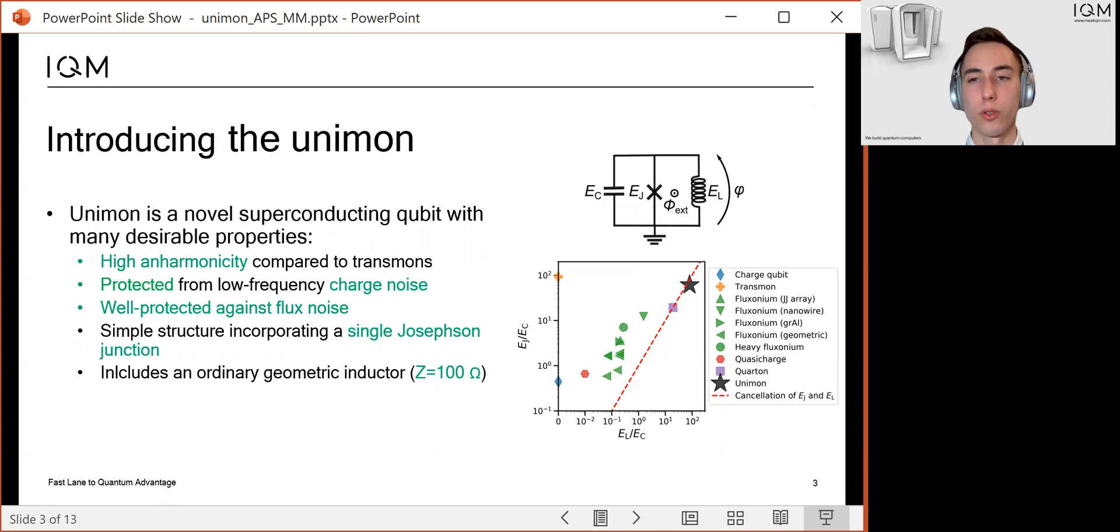Now I will introduce you to the Unimon. I begin by summarizing some advantages of the qubit after which I explain the theoretical background behind these advantages. First of all, the Unimon has a higher anharmonicity than in transmon qubits. This should enable faster single qubit gates with lower leakage errors.